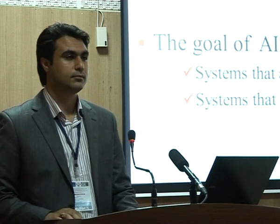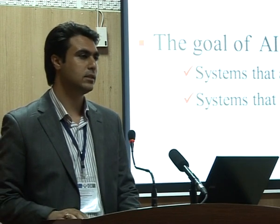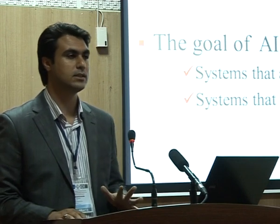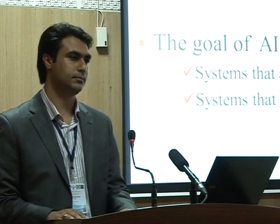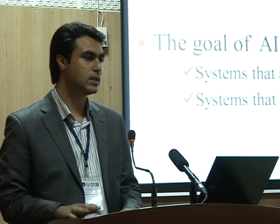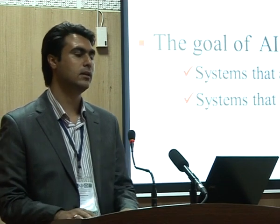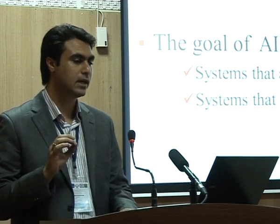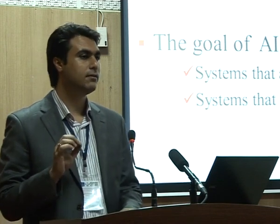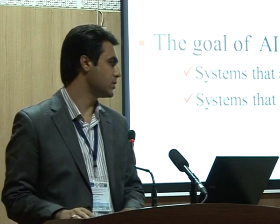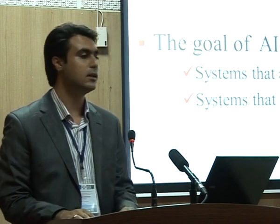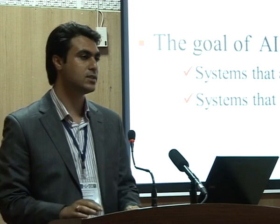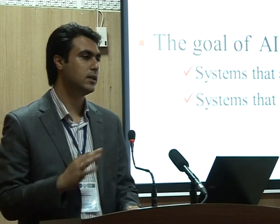What is artificial intelligence and what is its goal? Artificial intelligence is a branch of computer science. The goal of artificial intelligence is to make a machine capable of performing actions in a way that is better than human action, and also to understand the actions that humans do.